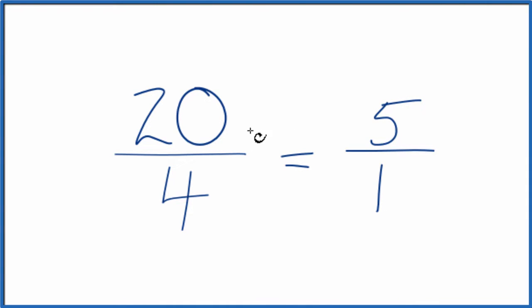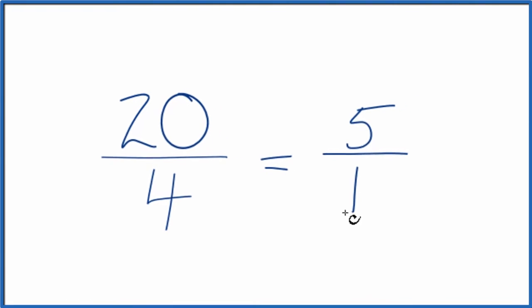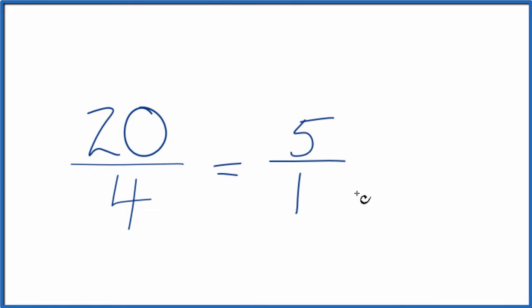So we know that the common factor, the greatest common factor is 4. Divide 20 by 4, you get 5. Divide 4 by 4, you get 1. And 5 over 1, that's the same as 5.